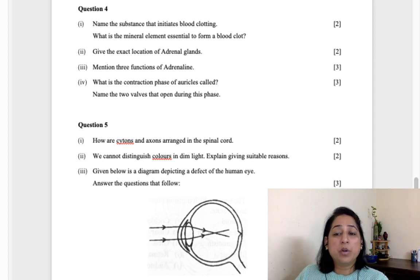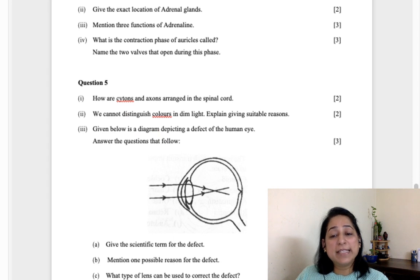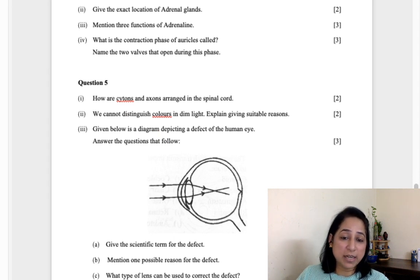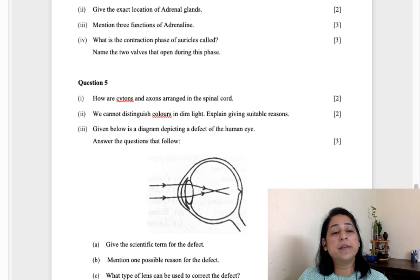Question number four: name the substances that initiate blood clotting. The substance that is produced is thromboplastin, which is produced first where the injured cells are there. What is the mineral element requirement? Mineral is calcium and vitamin is K. Give the exact location of adrenal gland - these are cap-like structures present over the kidney.